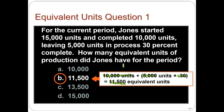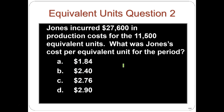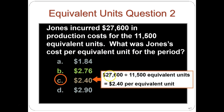Equivalent units are generally going to be smaller than total units, because we trim them back for costs not yet allocated. Jones incurred $27,600 in production costs for the 11,500 equivalent units. We can then calculate Jones's cost per equivalent unit by dividing $27,600 by 11,500 equivalent units. We use that cost per equivalent unit to decide how much cost remains in the department versus how much has transferred to finished goods or the next department.